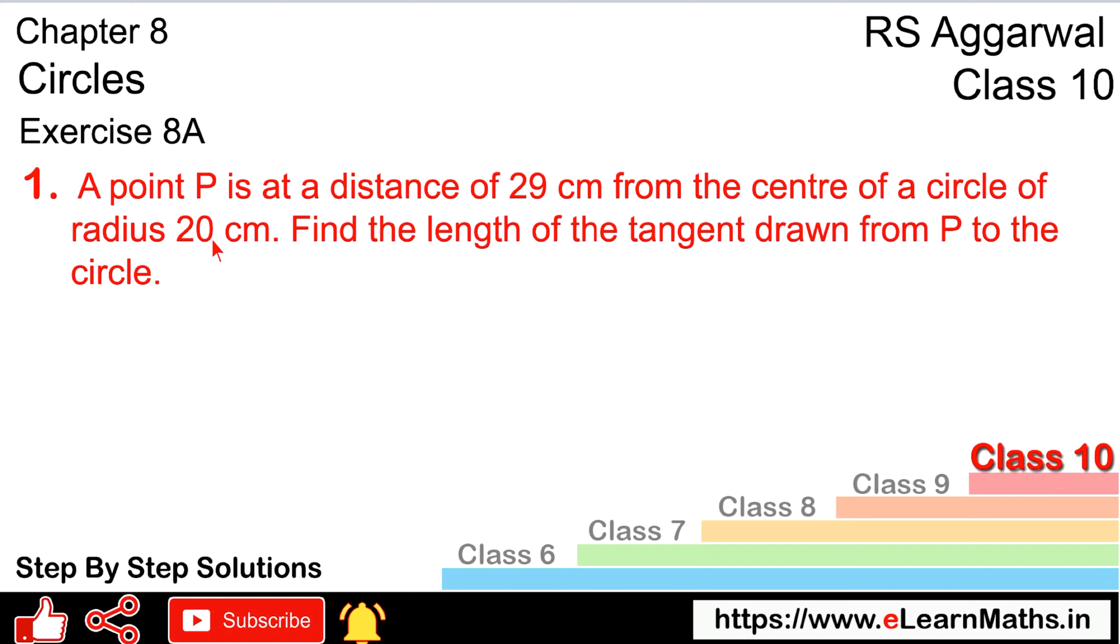The radius is 20 cm. Find the length of the tangent drawn from P to the circle. This is a circle, and this is a tangent. This is the center O.